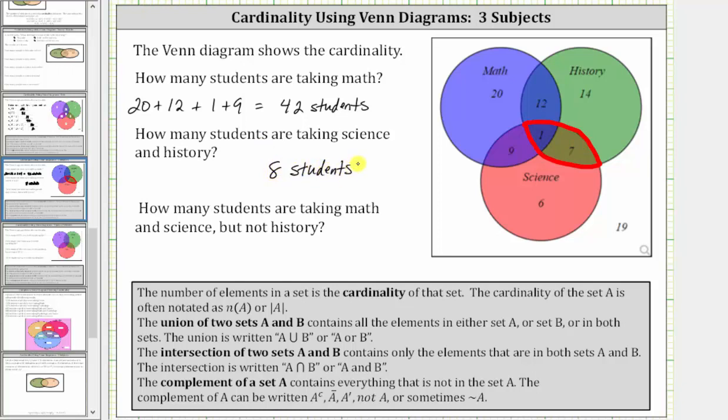For the third question: how many students are taking math and science, but not history? Let's first identify the set that represents the number of students taking math and science. Notice how the set of students taking math and the set of students taking science intersect in this set here.